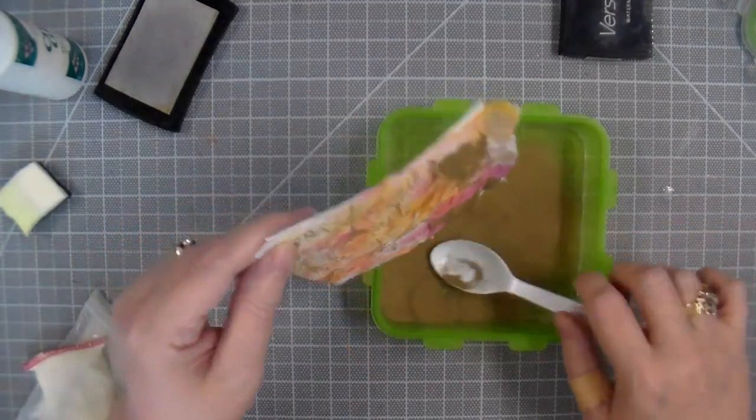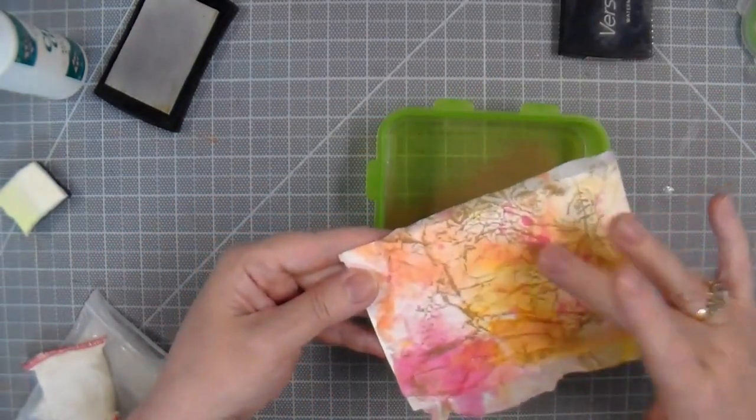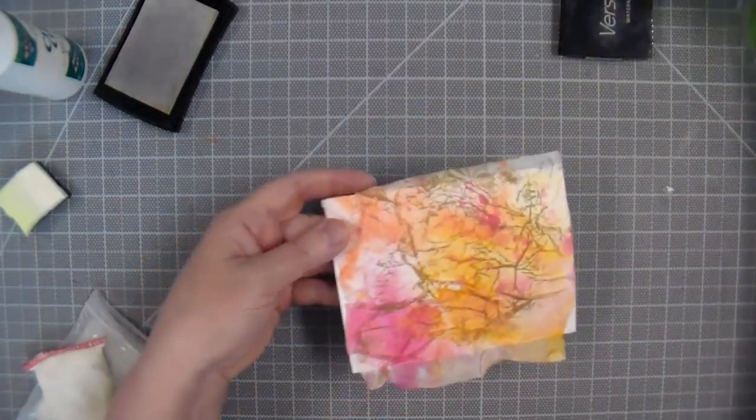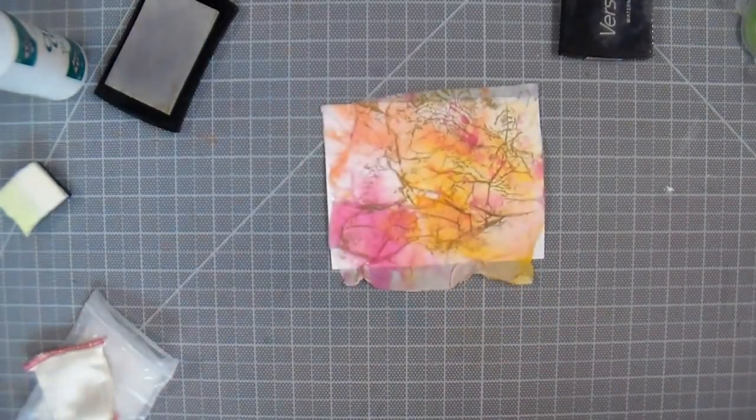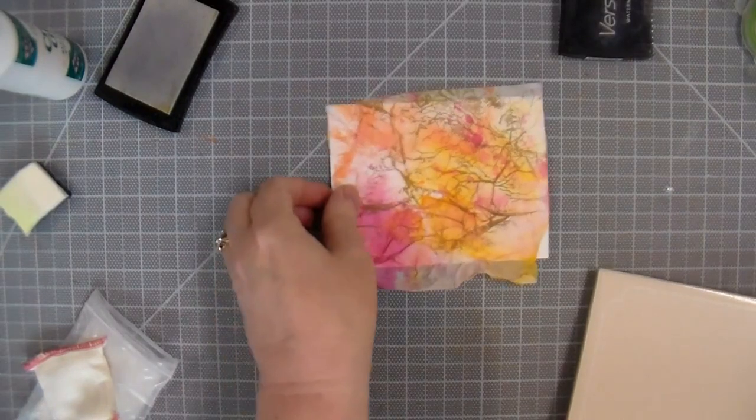Once in a while you might get a few little blobs of embossing powder, and you can just wipe those off with your finger or a paintbrush. Now I'm going to heat set this.